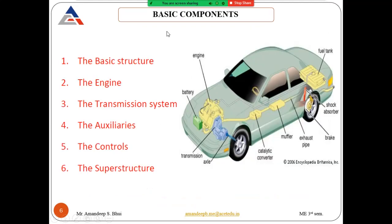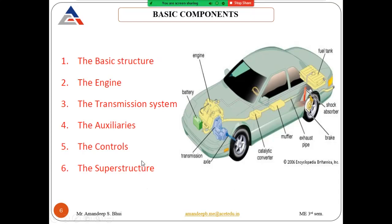Now, talking about the basic components of any automobile: first is the basic structure — the frame on which the chassis is installed, along with the engine, cooling system, auxiliaries, controls, and transmission system. Second is the engine. Third is the transmission system. Fourth are the auxiliaries. Fifth are the controls. And sixth is the superstructure, which is the outer body.